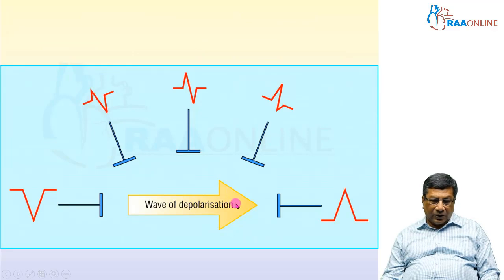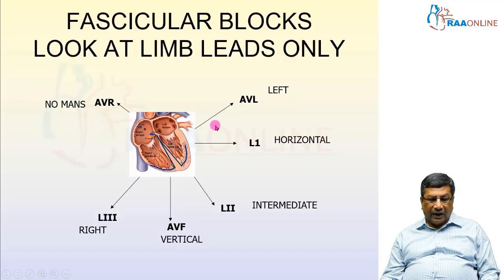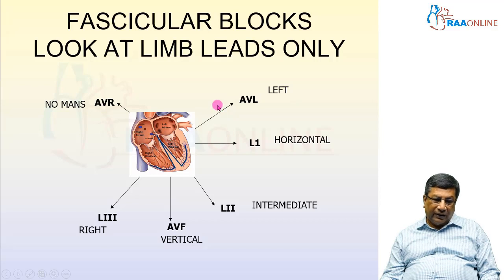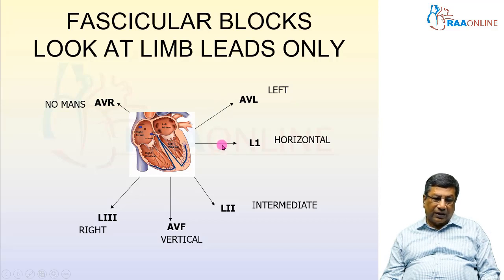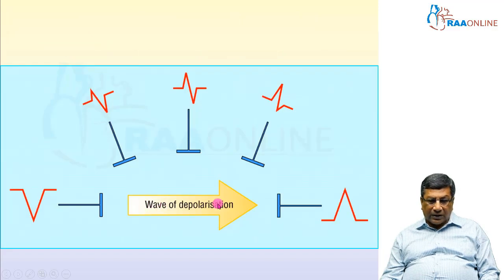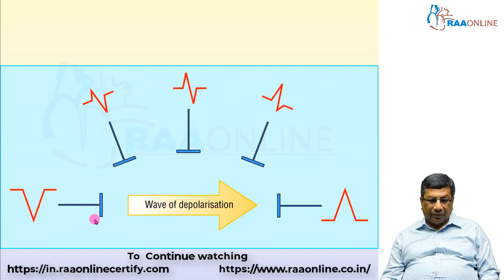Fascicular blocks, just like bundle branch blocks, produce abnormal ventricular depolarization. In bundle branch block you look at QRS predominantly in the chest leads, whereas to diagnose fascicular blocks, you concentrate on QRS in the limb leads because fascicular blocks produce abnormal axis deviation. Applying the same principle: if ventricular depolarization is coming towards a lead, that lead will record the tallest QRS complex; if it is going away from a lead, that lead will record the deepest negative QRS complex. We apply this same principle to diagnose fascicular blocks.